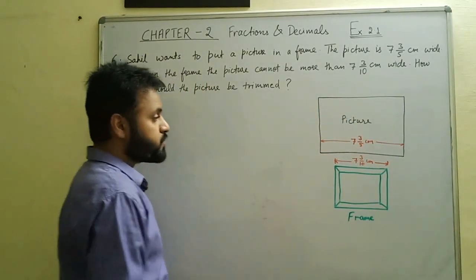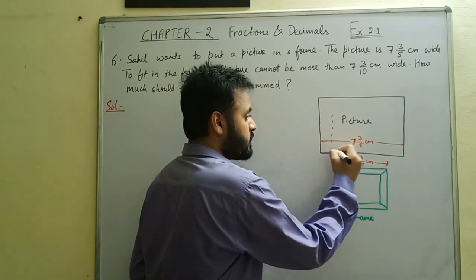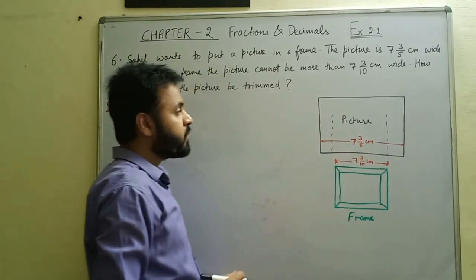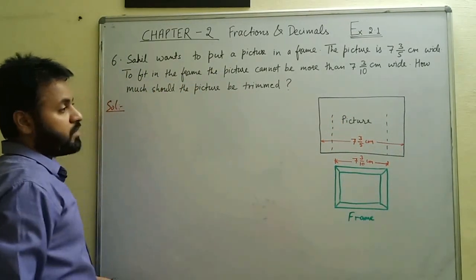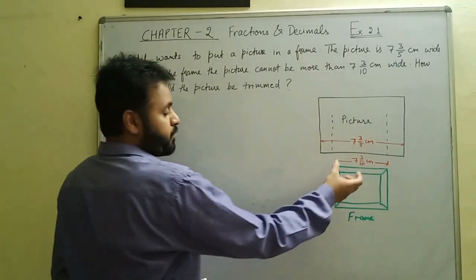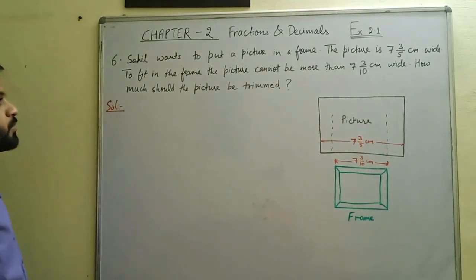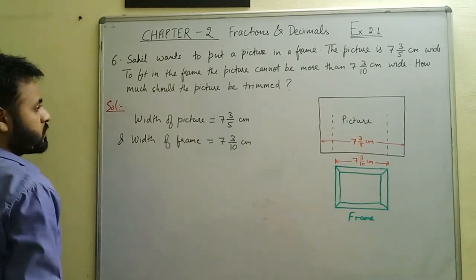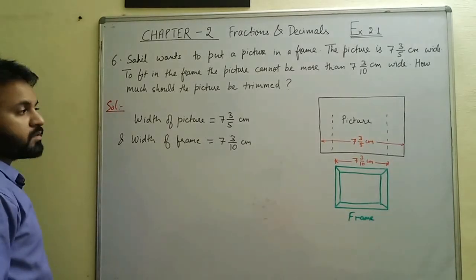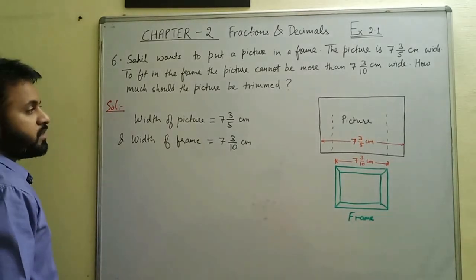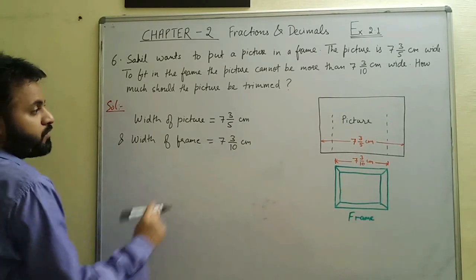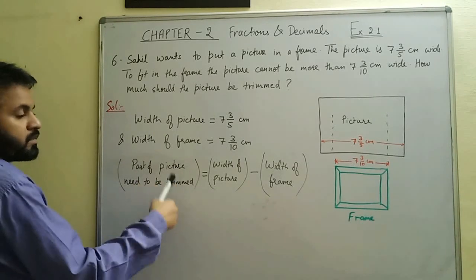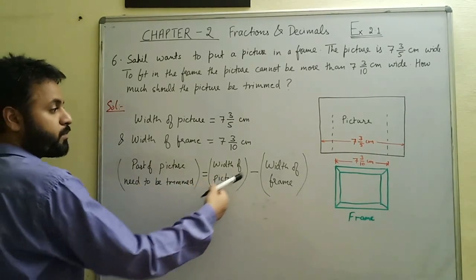We need to cut the picture so that it fits into the frame. To find how much to trim, we subtract: the part to be trimmed equals the width of the picture minus the width of the frame, which is 7⅗ minus 7 3/10.